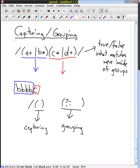What you can see here is capturing is the more typical case, and so it gets less characters. Grouping only is done with adding these two extra characters, the question mark and the colon here.